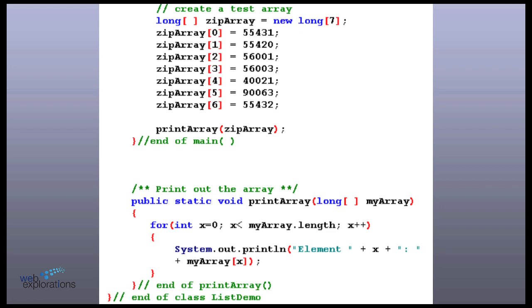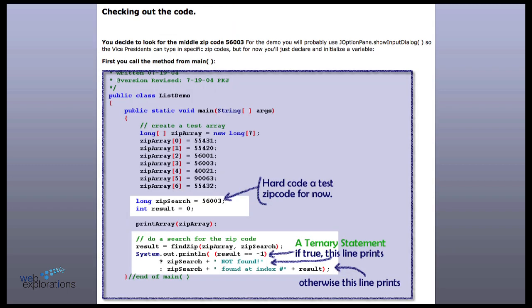Now, this is the, so the first smart thing we did was taking our million zip codes and put them down to six. The second thing is it's smarter to work in the middle of your sample data. So you make sure you get in the middle of your loops. Now, when you do the demo, we'll probably use a J option pane show input dialog box. So the vice presidents can type in specific zip codes. But for now, we're just going to hard code the data. You know, why fiddle with extra code you don't need while you're testing things out?